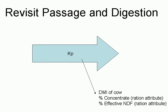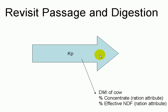As food is consumed by the cow, there's almost a pressure effect — as the dry matter intake of the cow increases, this passage rate is going to increase. Furthermore, when the percent concentrate in the ration increases, it's going to increase the passage rate, and when the effective NDF increases, it'll actually slow down the passage rate. So we have a number of features of the ration itself that influence the flow of feed and thus the flow of digestion in the cow.